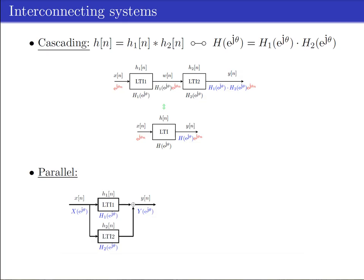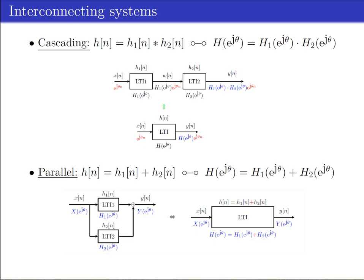The second common type of connection is two parallel LTI systems. These two systems can be combined to one system from which the frequency response H(e to the power j theta) is equal to the sum of the two individual frequency responses H1(e to the power j theta) plus H2(e to the power j theta). Because of the linearity of the FTD, the same holds for the impulse responses: hn of the combined system equals h1n plus h2n.